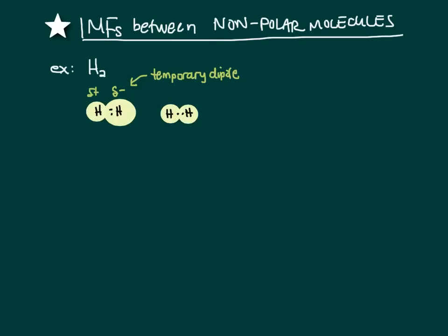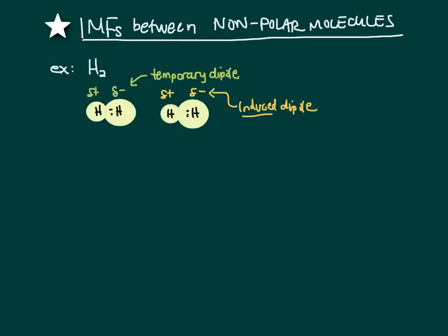What if this molecule is near another H2 molecule and it has its temporary dipole? The electrons here are going to push the electrons in the other molecule away from them and induce a dipole on the other molecule. So now you have two nonpolar molecules with temporary dipoles that aren't going to last very long.